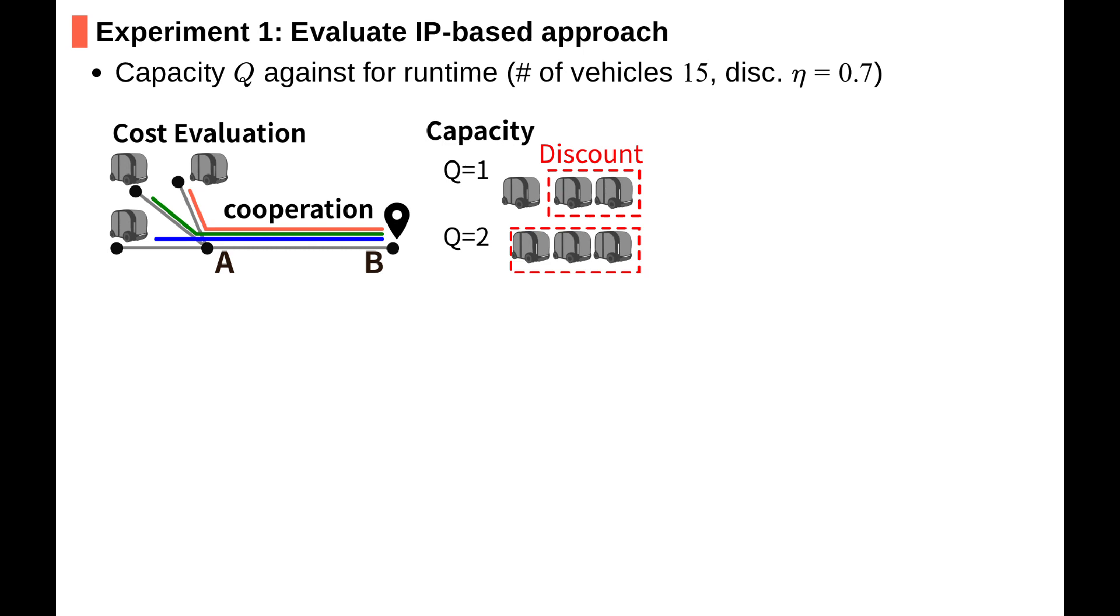In this slide we show two experimental results using IP solvers. First we evaluate the capacity constraint. Let's see the figure. We evaluate the travel cost of three vehicles traveling together from A to B. The parameter Q works as follows: when evaluating total cost, if Q is one, a vehicle can cooperate with another one vehicle.